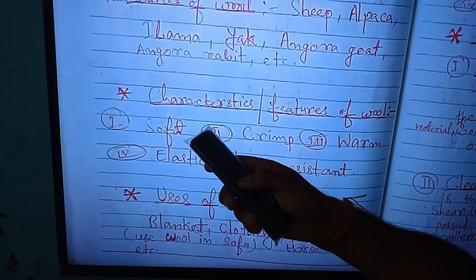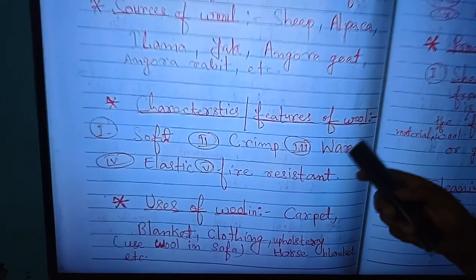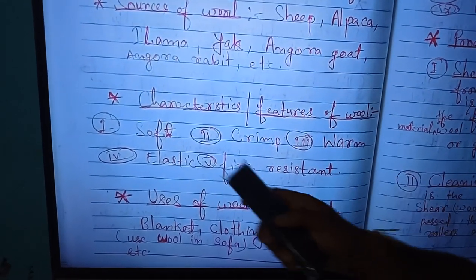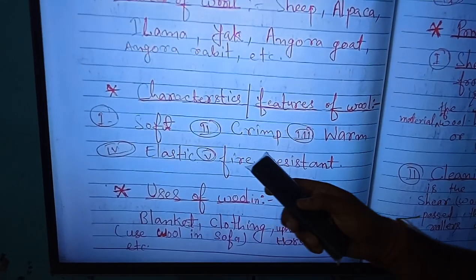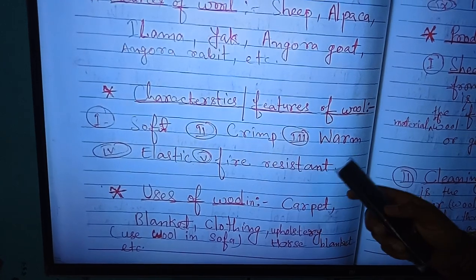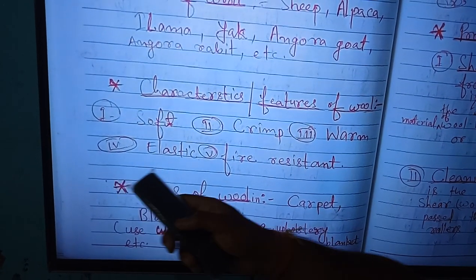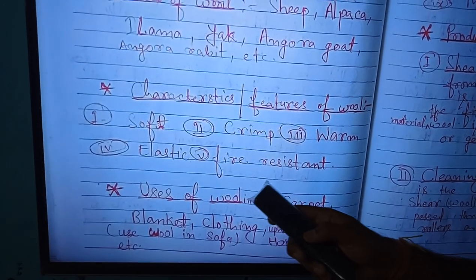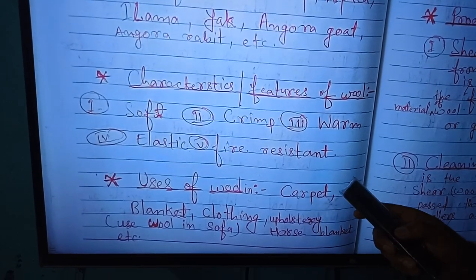Now we are going to discuss the characteristics and features of wool. First: soft. Second: crimp. Third: warm. Fourth: elastic. Fifth: fire-resistant.